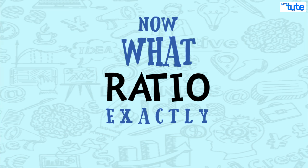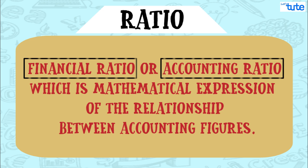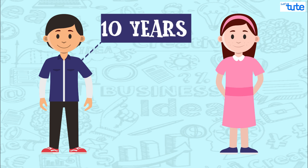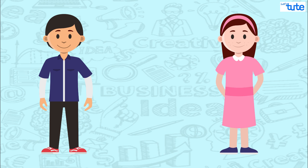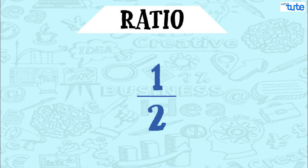Now, what does ratio exactly mean? A ratio is defined as the indicated quotient of two mathematical expressions and as the relationship between two or more things. In accounting, ratio means financial ratio or accounting ratio, which is a mathematical expression of the relationship between accounting figures. For example, the age of one boy is 10 years and his sister's age is 5 years. We can say the sister's age is half of the brother's age — this half is the ratio.